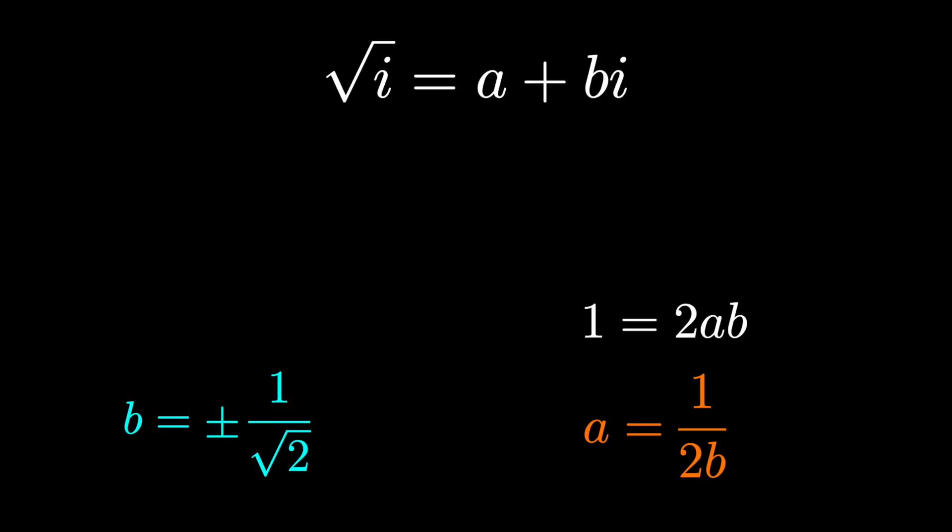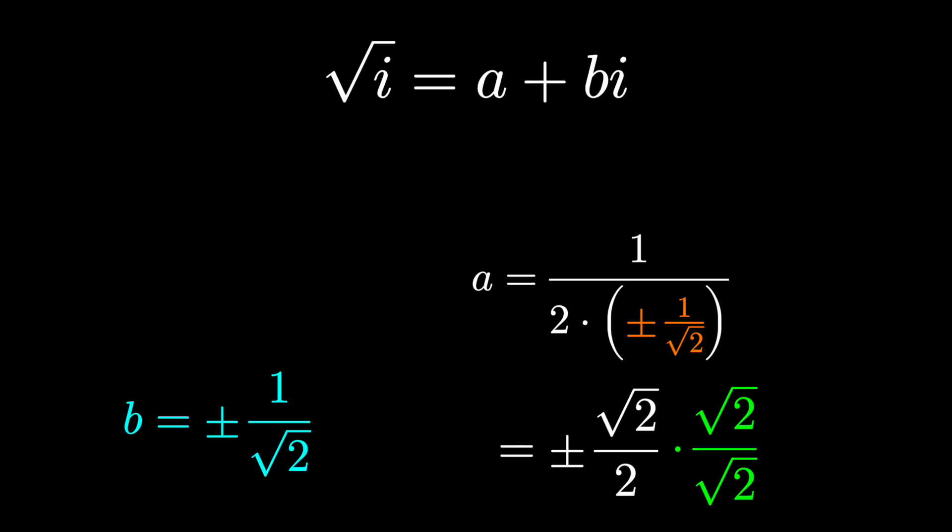And since we have b, we very quickly get a just by re-substituting. When b is positive 1 over root 2, a also turns into 1 over root 2. And when b is minus 1 over root 2, a also turns into minus 1 over root 2.